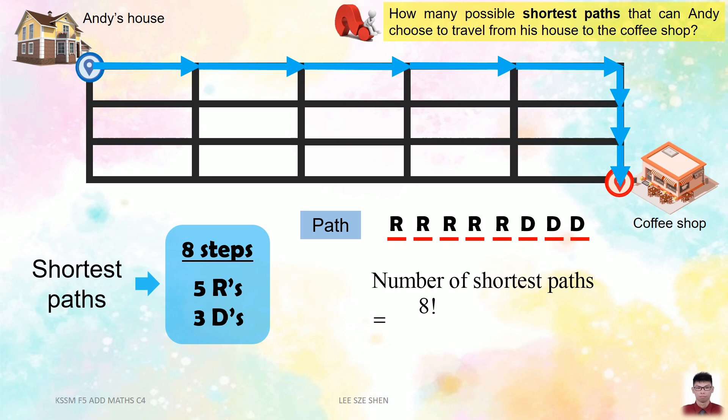But there are identical letters, so we need division to exclude them. There are 5 identical R, which should divide 5 factorial. 3 identical D, so we should divide 3 factorial, which gives us 56 ways. This means that Andy has 56 choices to travel from his house to the coffee shop.